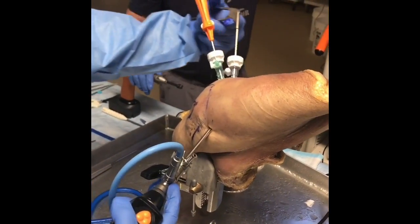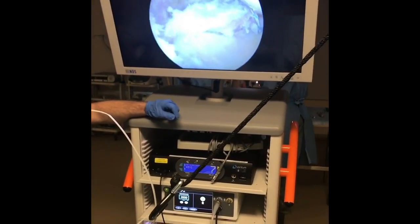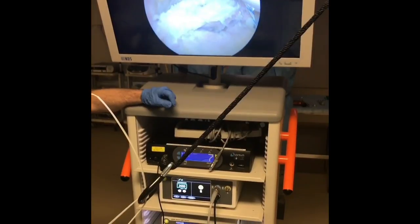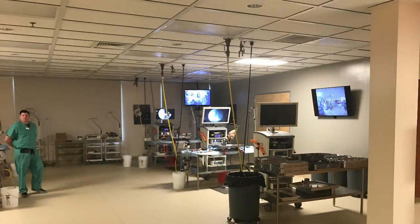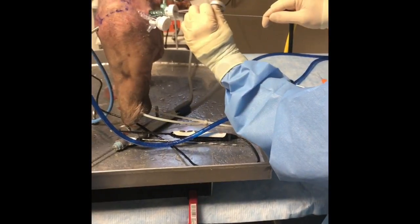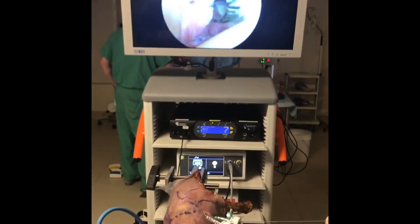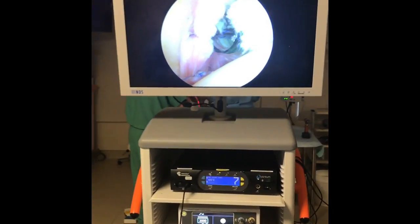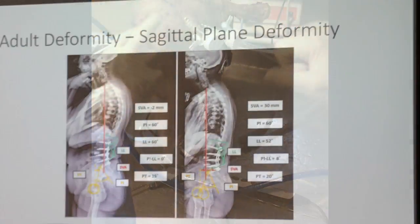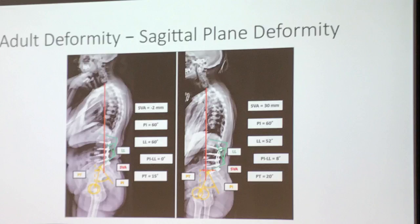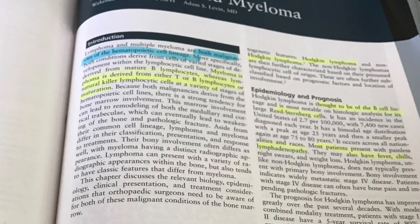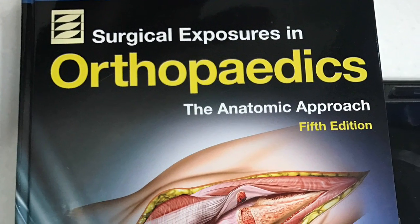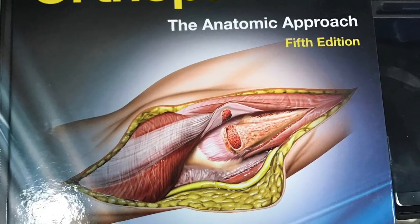Another large component of our training is with cadavers. We spend a large percentage of our time dissecting and practicing surgery on cadavers. Here we are practicing how to fix a labral tear in the shoulder — this is one of the rooms we use to practice these surgeries. Another video here shows a rotator cuff repair — we're using a cadaver shoulder and looking at the monitor to evaluate our progress. Learning never ends in residency. It is fast-paced and a large learning curve, but if you keep the same study habits that got you through college and medical school, you'll do just fine. Thank you for watching and we'll see you next time.